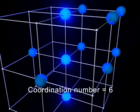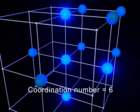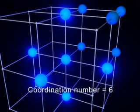In a simple cubic array, any given particle has a neighboring particle above, below, to the right, to the left, in front, and in back of it for a total of six nearest neighbors.